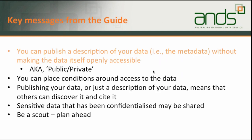Key messages from the guide: you can publish a description of your data — that is, the metadata — without making the sensitive data itself openly accessible. You can place conditions around access to the data. Publishing your data or just a description means others can discover and cite it. Sensitive data that has been confidentialised — modified so it is no longer sensitive — may be shared in many circumstances. And lastly, be a scout and plan ahead. There are things you can do before or while collecting your data to make the process of publishing and sharing much easier in the long run.